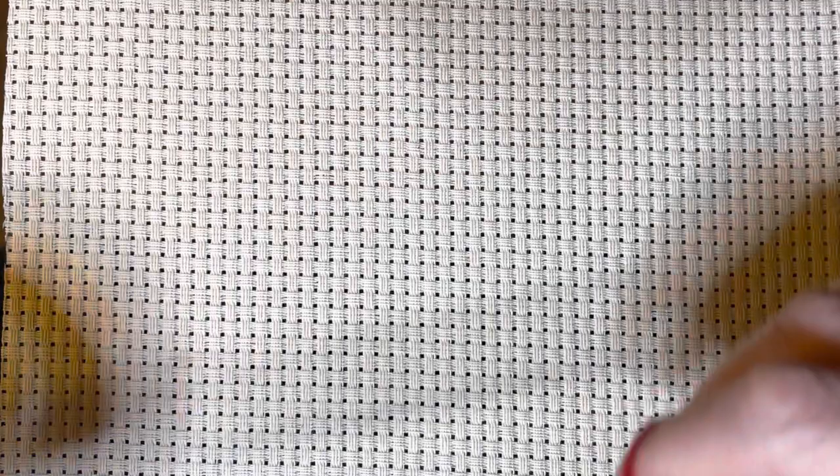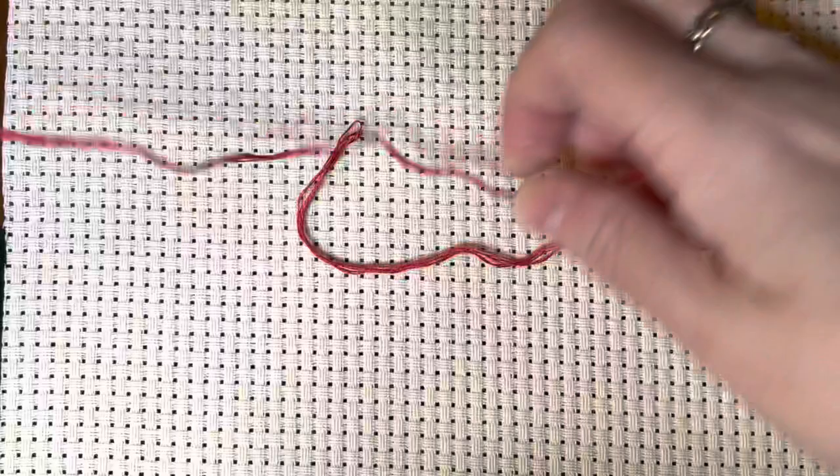So I have a piece of six count Aida fabric that I'm going to use to show you how you can start and end a thread without flipping your frame over. So I've got some embroidery floss, so I just need to pull one strand. So I am going to show you how to do this with two strands of floss. So you just pull one strand of floss.